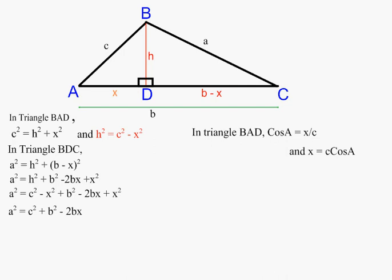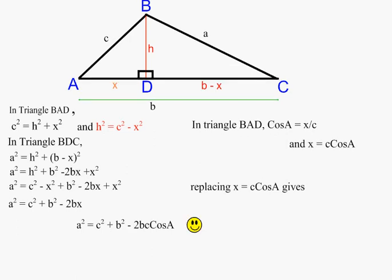Now we have a value for x. We're going to put x equals c cosine A back into the equation a squared equals c squared plus b squared minus 2bx. By replacing x we will have the cosine rule: a squared equals c squared plus b squared minus 2bc cosine A, which proves the cosine rule.